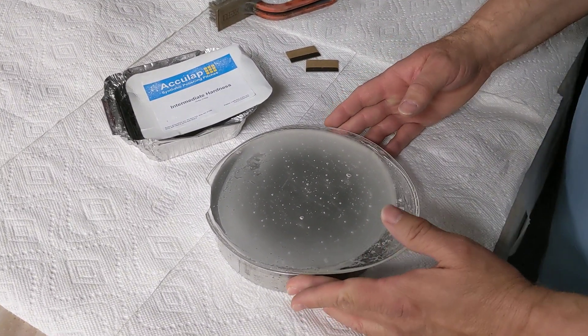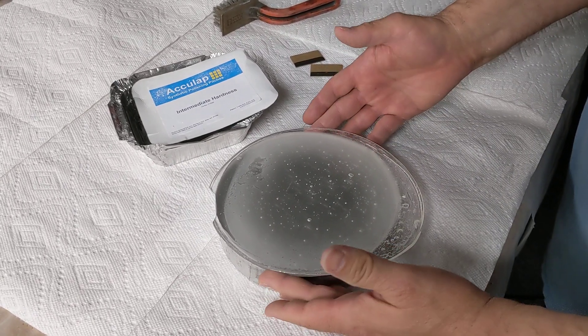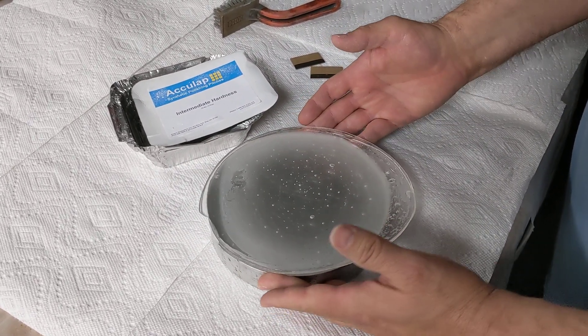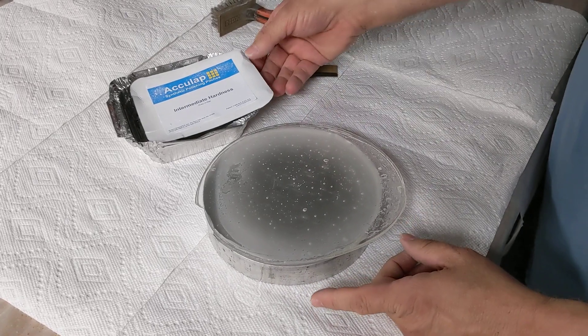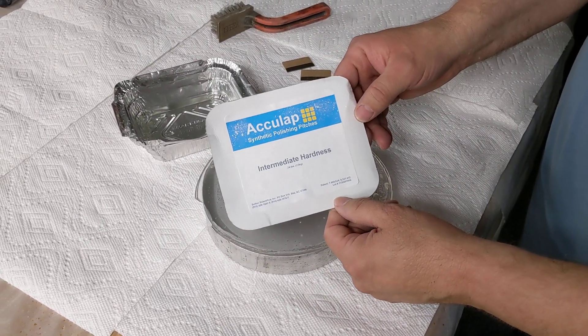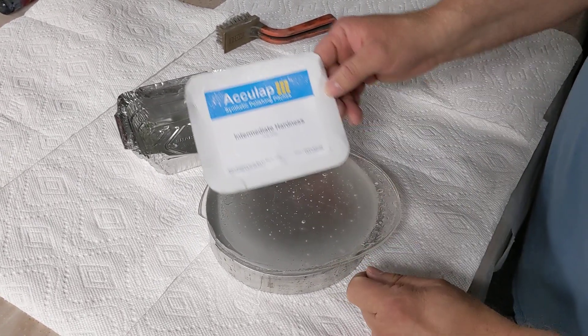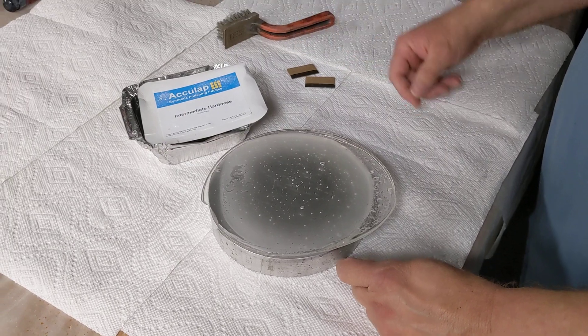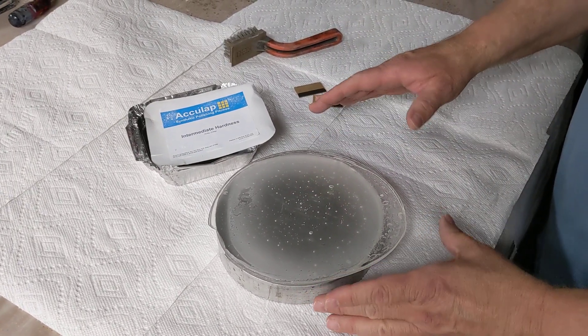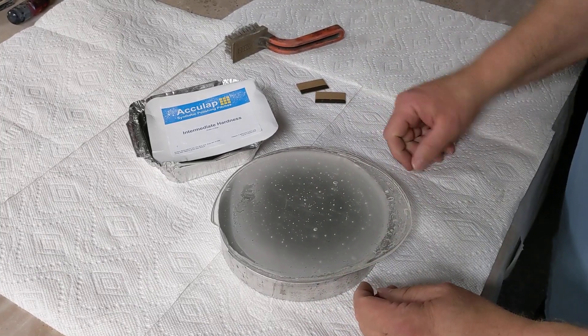Hi, I'm Gordon Waid at Waid Research. I'm working on a 9 inch f2.7 mirror and I just poured this pitch polisher, but this isn't actually made out of pitch. This is artificial pitch called Acculap and this particular Acculap, the hardness is intermediate hardness. That's a little harder than normal. I'm polishing a sphere and so I want it to be hard to maintain the spherical shape.